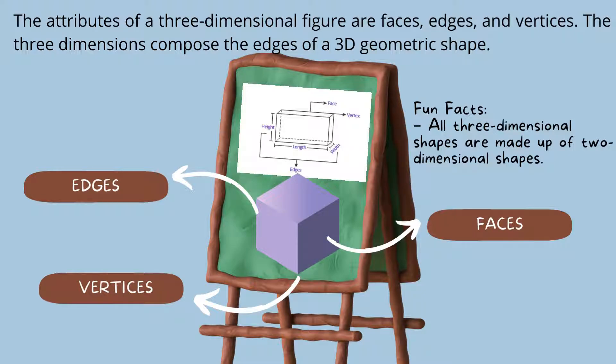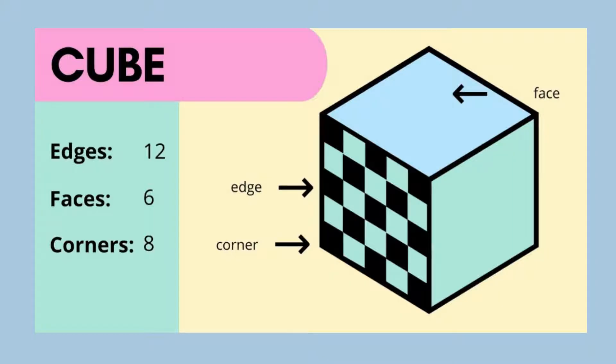Can you see squares in the cube? Here is a cube. It has 12 edges, six faces, and eight corners.